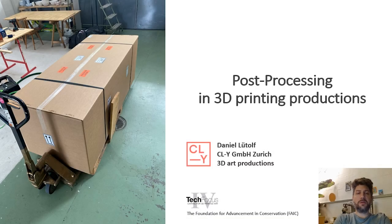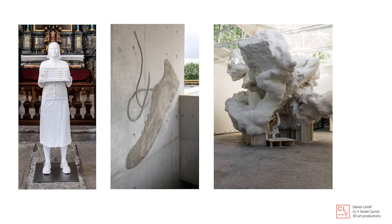Hi everyone, my name is Daniel Lütholf and I will talk about post-processing in 3D printing production. As a 3D art producer, I get in contact with a huge variety of 3D prints. For example, we have on the left side a human size SLA print from Alex Hanima, in the middle a huge sneaker on a concrete wall by Isabel Krieg, and on the right side the infidential space by Christian Kerez at the Biennale — a huge 3D print that builds a hollow room.